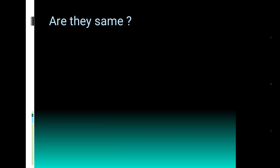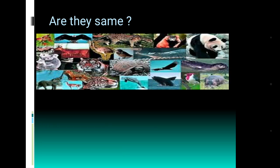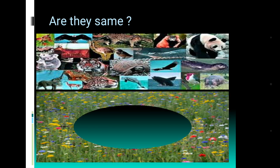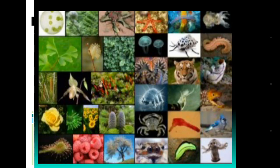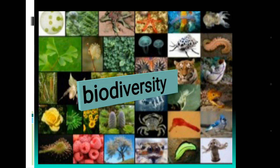Actually we can't say that they are same in their characteristics. Each organism is distinguishable by their characteristics and they are not same. So this abundance and variability among organisms existing on the earth is called biodiversity. Biodiversity means the variation among the organisms which indicates their abundance and their characteristics variation.